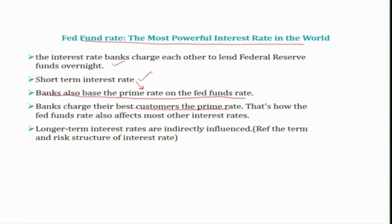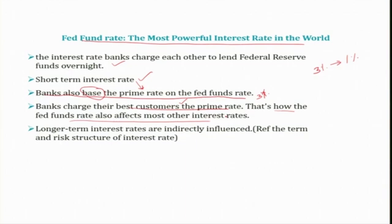Banks also base the prime rate on the Fed fund rate — the rate charged to their best customers. The Fed fund rate serves as a base rate, and additional percentage points are added for different loan types. For example, for long-term loans they charge some additional percentage points. In some cases, the prime rate is about 3 percentage points above the Fed fund rate. So when the Fed fund rate declines — say from 3% to 1% — the best and most loyal customers of the bank also benefit from that 2 percentage point reduction. That is how the Fed fund rate affects most other interest rates in the economy.